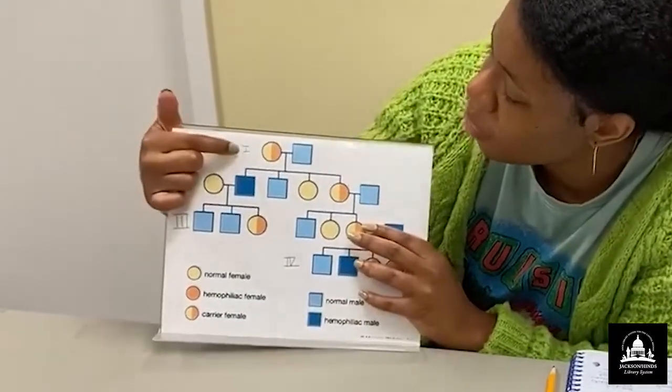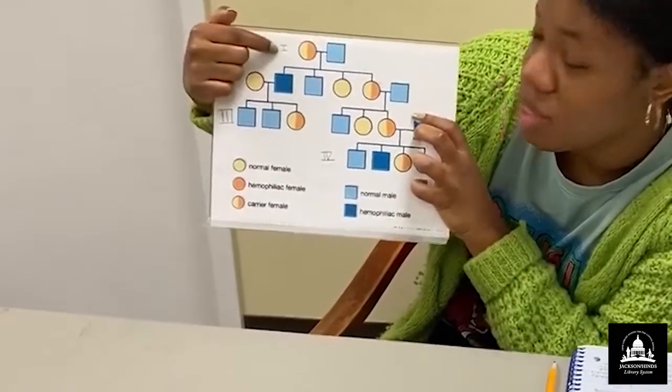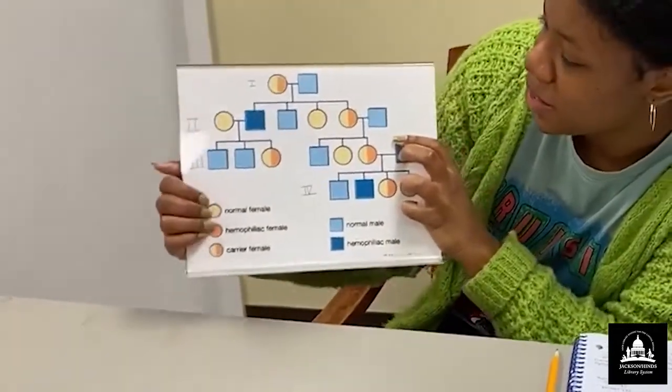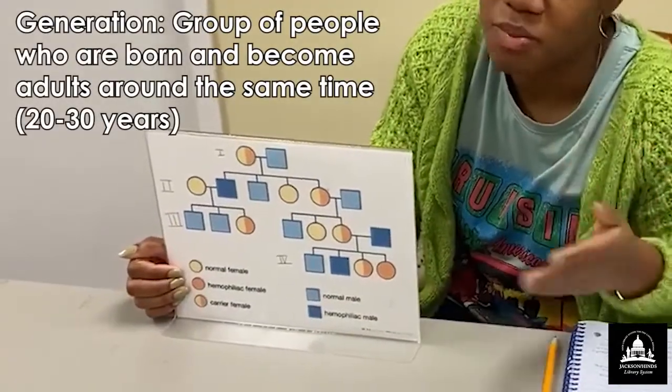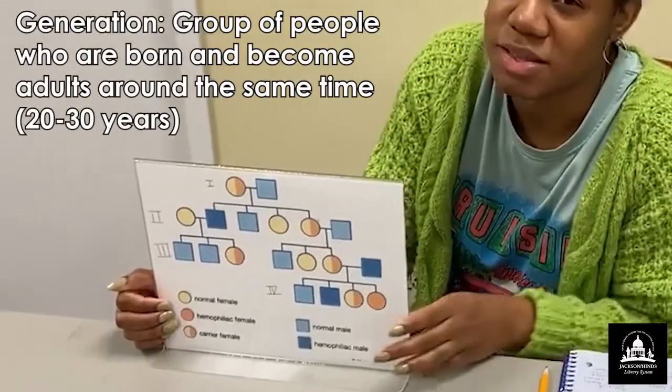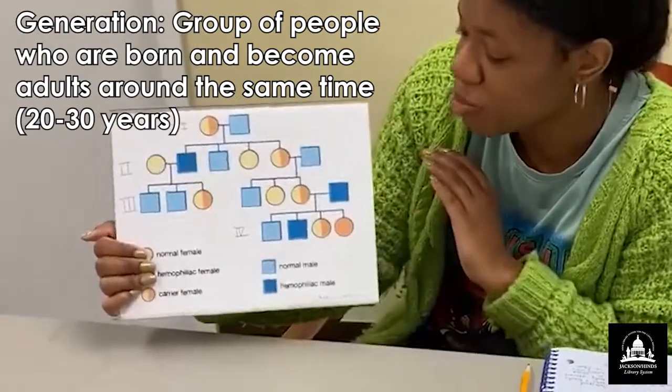So you see we have a little Roman numeral right here. And the Roman numeral indicates a generation. And a generation is just a group of people born around about the same time. Okay. For the most part.